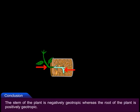Conclusion: The stem of the plant is negatively geotropic, whereas the root of the plant is positively geotropic.